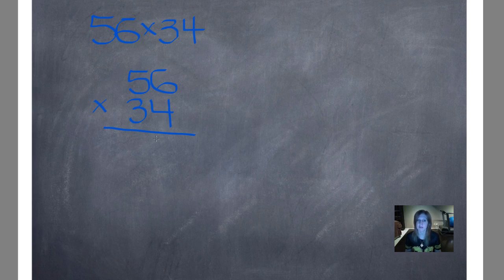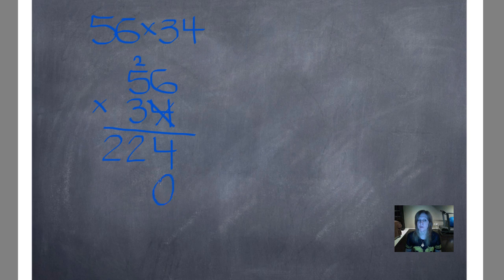So 4 times 6 is 24. I'll put my 4 below and regroup with my 2. Now I'm going to multiply diagonally: 4 times 5 is 20, plus 2 is 22. Now when I'm done multiplying by this number, I'm going to X here and put an O directly below it. We have this little saying: X's and O's and kisses to go. So we always X out the first number we multiply by and put an O below it. We also X out any numbers that we carried so we don't accidentally add them again.